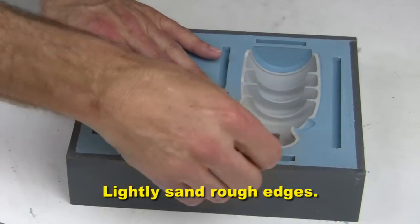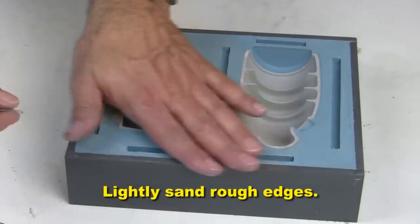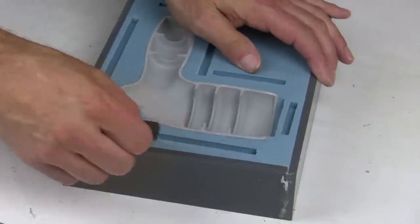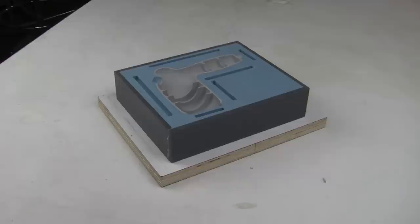The edges can be sanded smooth with 220 grit sandpaper to remove any additional flashing. Once the first mold half is cleaned up, we can prepare to add our vents and fill port.